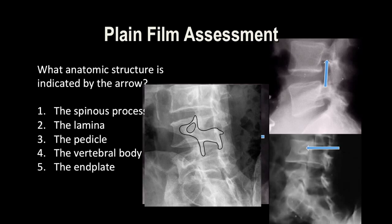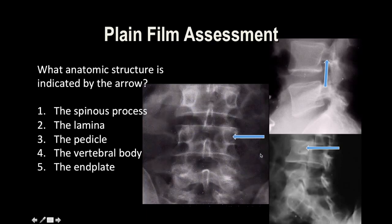In plain film assessment, another concept to cover is the 'Scotty dog,' an anatomical reference or schematic that we visualize mainly on an oblique view of the lumbar spine. It's a good anatomical reference. In the frontal view, the same schematic is shown, and the question asks you to identify the structure indicated by the arrow — across frontal, oblique, and lateral projections, all pointing to the same structure.